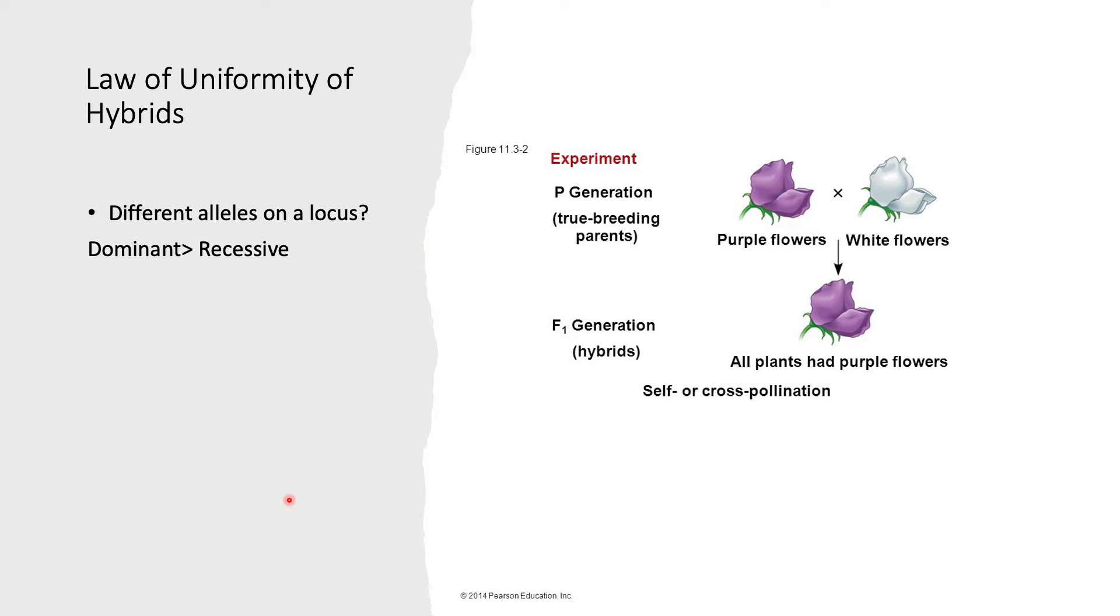Let's get into the law of uniformity of hybrids of the first generation. That's actually what the law is called. I just shortened it here. Basically, what we're saying here is if you have a truly bred parent, so a fully purple father and a fully white mother in this example, you will have this essential result. So our question is, are we seeing different alleles on a locus? Yes, purple and white.